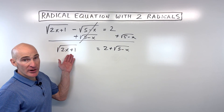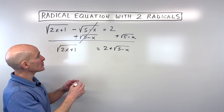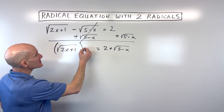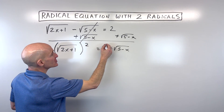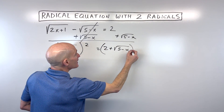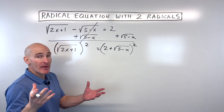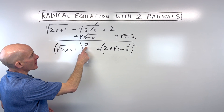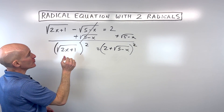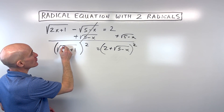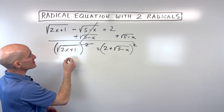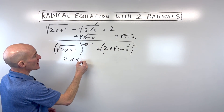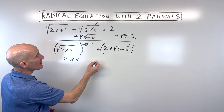Now that we've isolated the square root on the left, we're going to square both sides of the equation to keep it balanced. The square and the square root are inverses of one another — they cancel each other out, leaving you with 2x plus 1 on the left side.